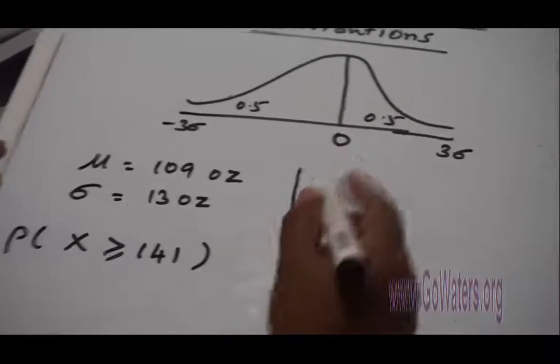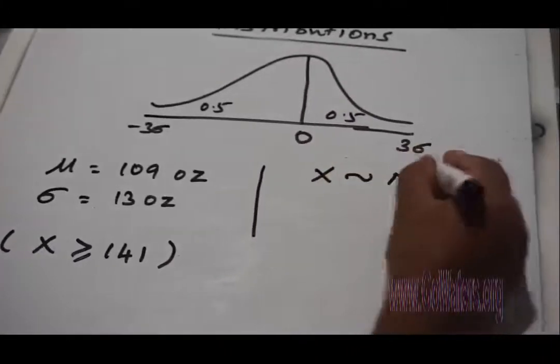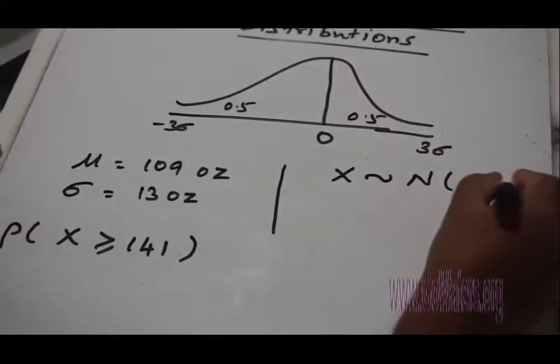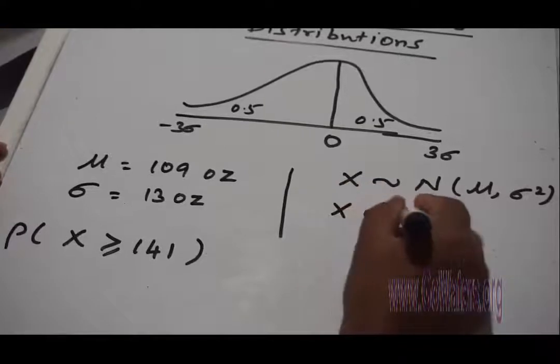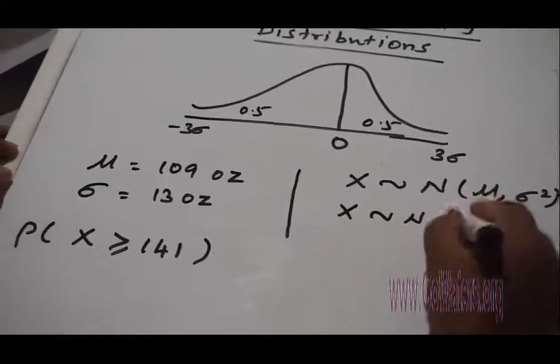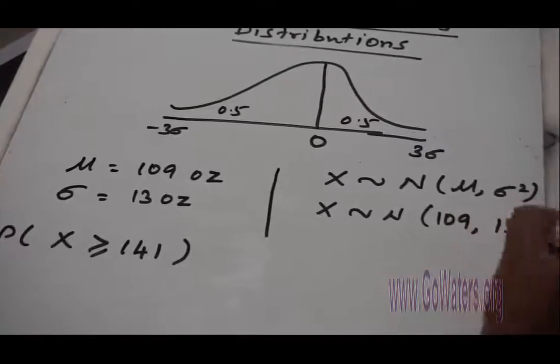As I said earlier, X follows normal with mean μ and variance σ². So in this case, X follows N(109, 13²).